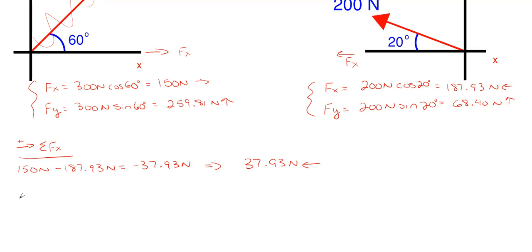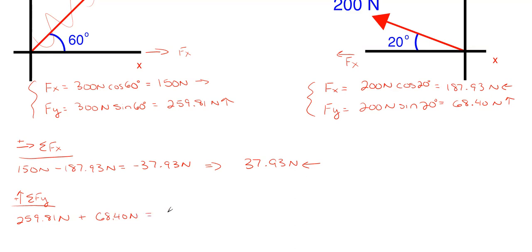Repeating for the y direction, taking upward as positive and downward as negative: we have 259.81 newtons upward plus 68.40 newtons upward, both positive, giving a total of 328.21 newtons in the upward direction.